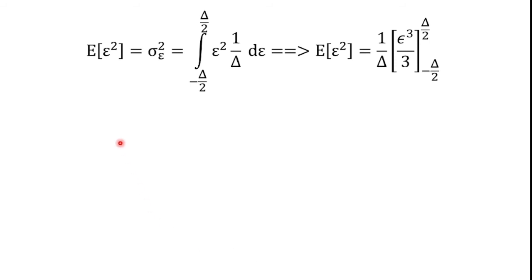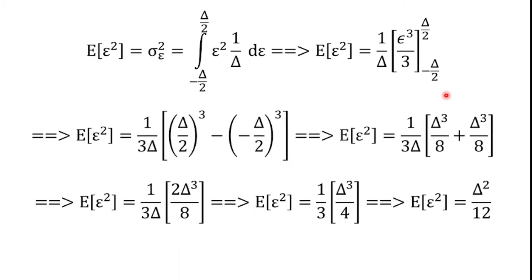We get E[epsilon²] = integral from minus delta/2 to plus delta/2 of epsilon² · (1/delta) d(epsilon). Bringing 1/delta outside the integral: (1/delta) · [epsilon³/3] evaluated from minus delta/2 to plus delta/2. Substituting the upper value epsilon = delta/2 and lower value epsilon = minus delta/2 and simplifying, we finally get E[epsilon²] = delta²/12.